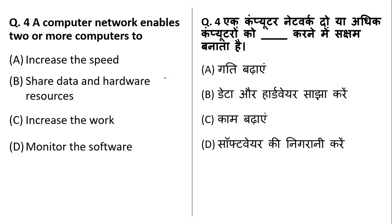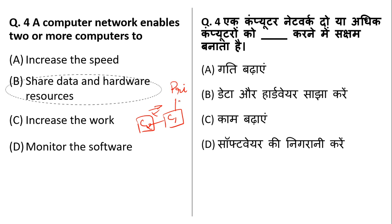A computer network enables two or more computers to share data and hardware resources. When computers in a company are connected, they can send and receive files and share hardware like printers. A computer network does not increase speed, increase workload, or monitor software — only sharing data and hardware resources is correct. So option B is the correct answer.